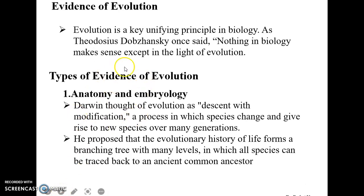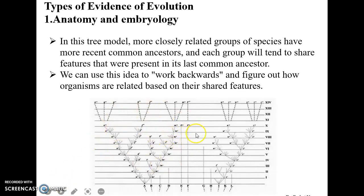We will now discuss evidences of evolution through anatomy and embryology. Darwin thought of evolution as descent with modification, a process in which species changed and gave rise to new species over many generations. He proposed that the evolutionary history of life forms a branching tree with many levels. Closely related groups of species share more recent common ancestors, while groups that are further apart share fewer features. We can use this idea to work backward and figure out how organisms are related based on their shared features.